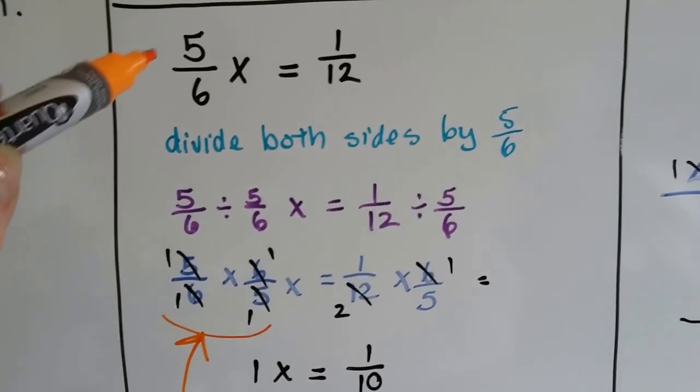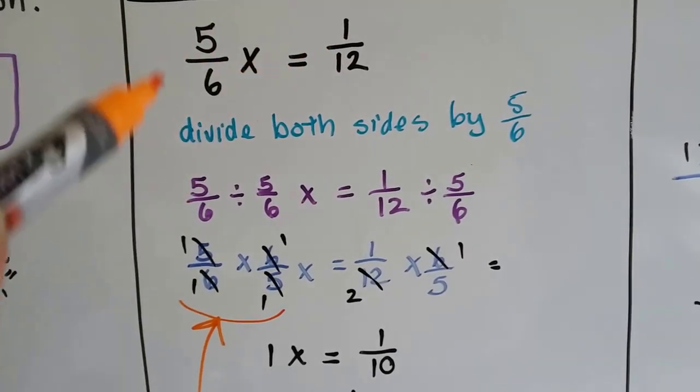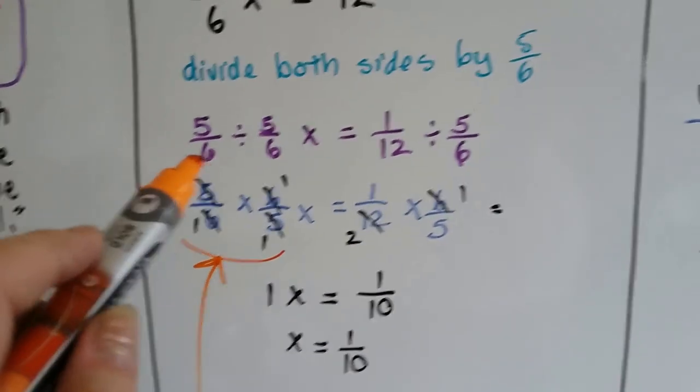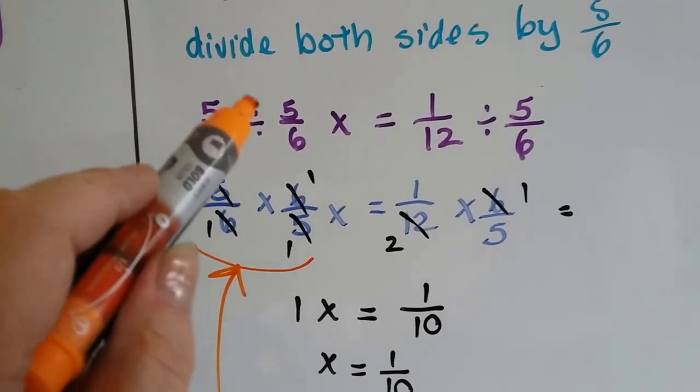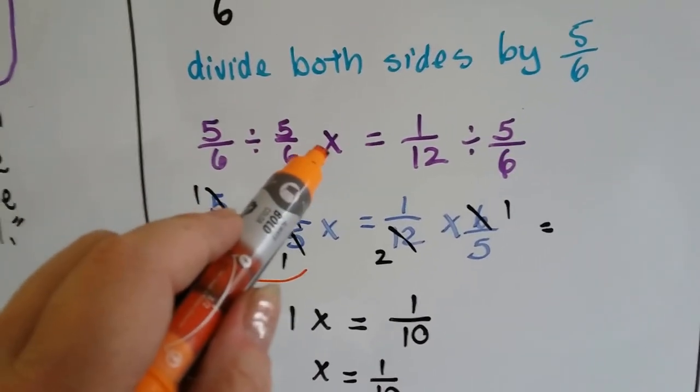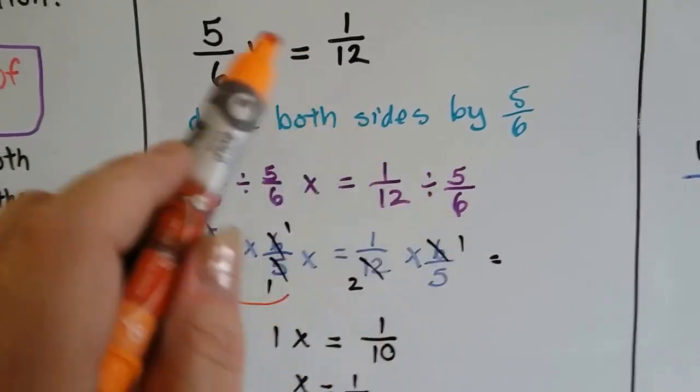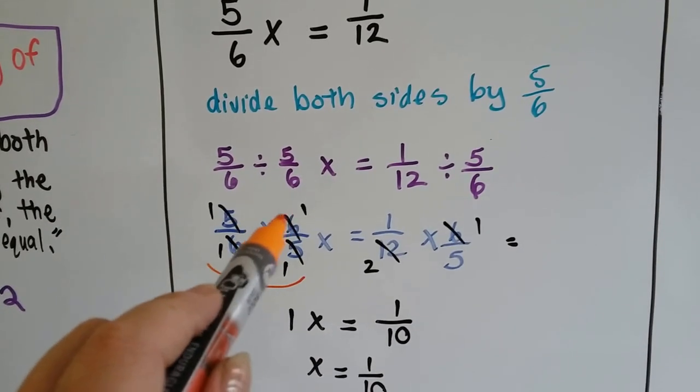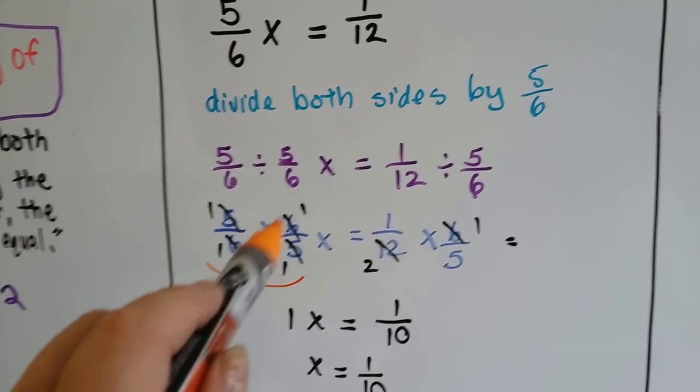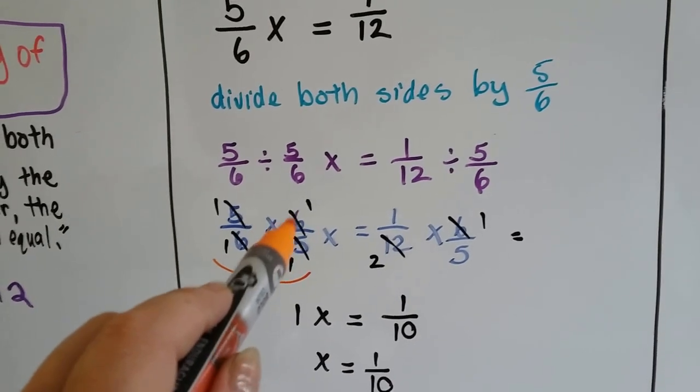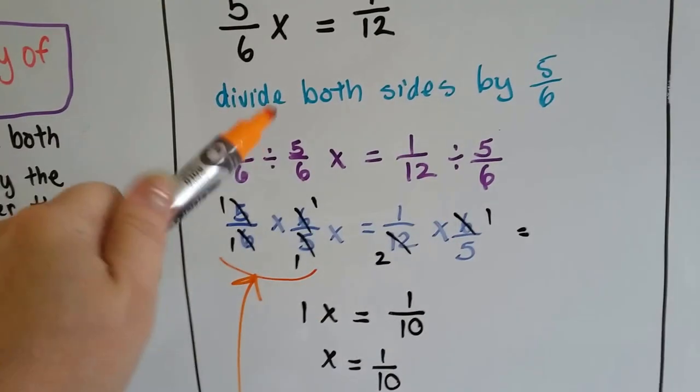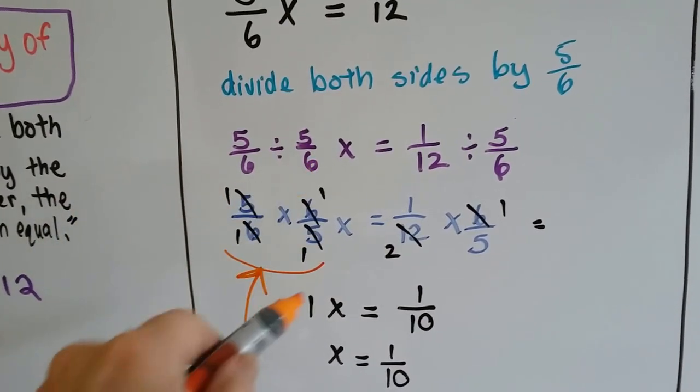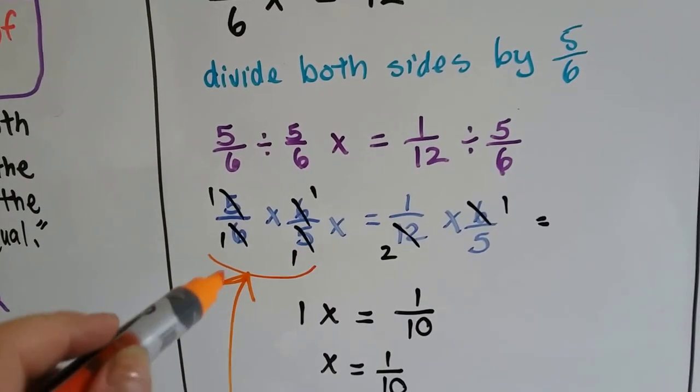Even with fractions, if we've got 5/6x equals 1/12, we can divide both sides by the 5/6. Do you remember how to divide fractions? If it's 5/6 divided by 5/6x equals 1/12 divided by 5/6, what we do is we turn it upside down and we multiply its reciprocal. 6 over 5. We turn this into a multiplication and we flip it so that the 6 is the numerator and the 5 is the denominator. That's how we multiply fractions.